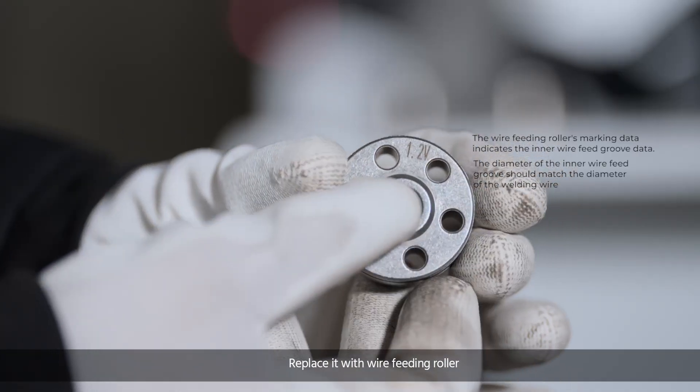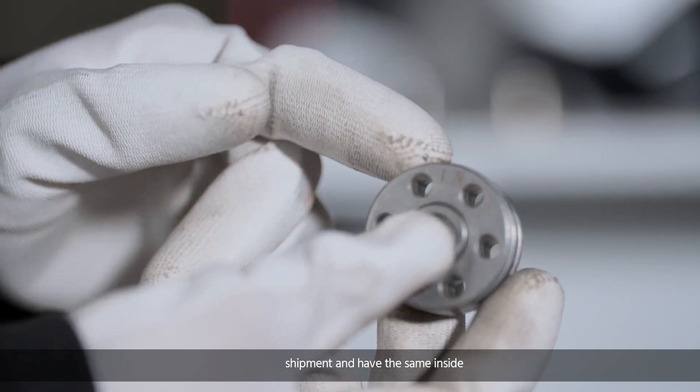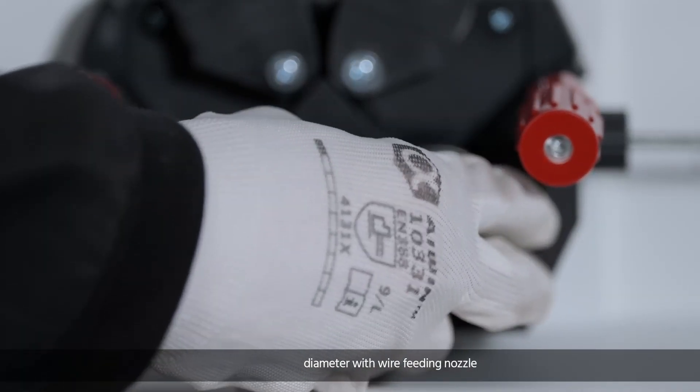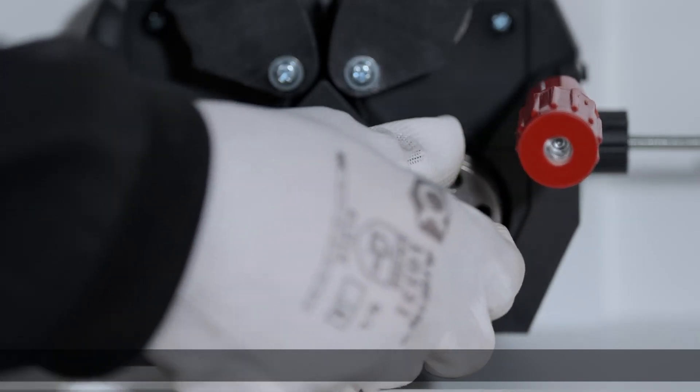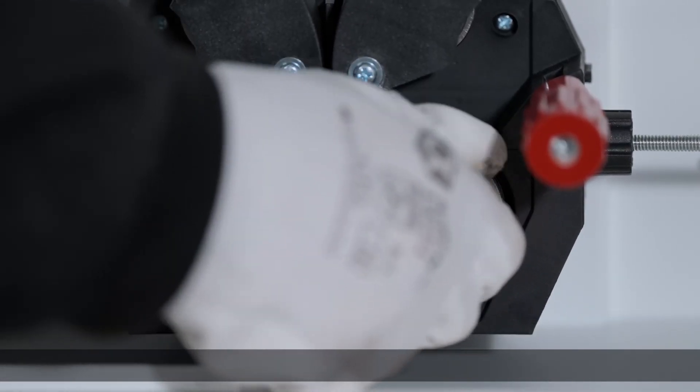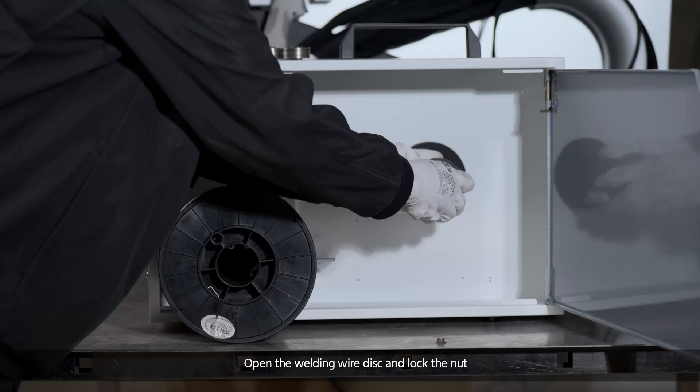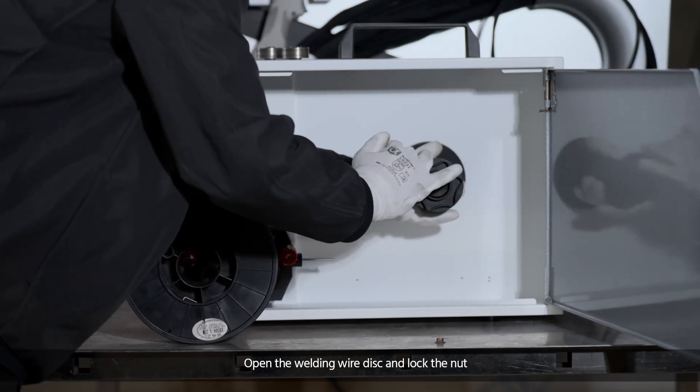Replace it with the wire feeding roller included with the machine shipment that has the same inside diameter as the wire feeding nozzle and welding wire diameter. Open the welding wire disc and lock the nut.